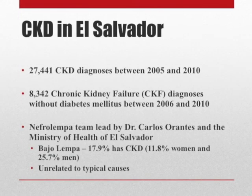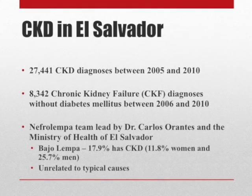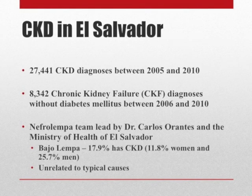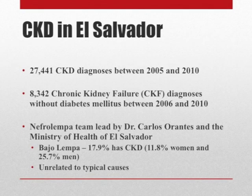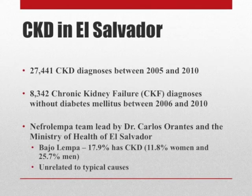In El Salvador, between 2005 and 2010, more than 27,000 cases of CKD had been reported. Additionally, of those 27,000, more than 8,000 people reached the last stage of the illness — chronic kidney failure — where people already need dialysis. This was between the years 2006 and 2010.